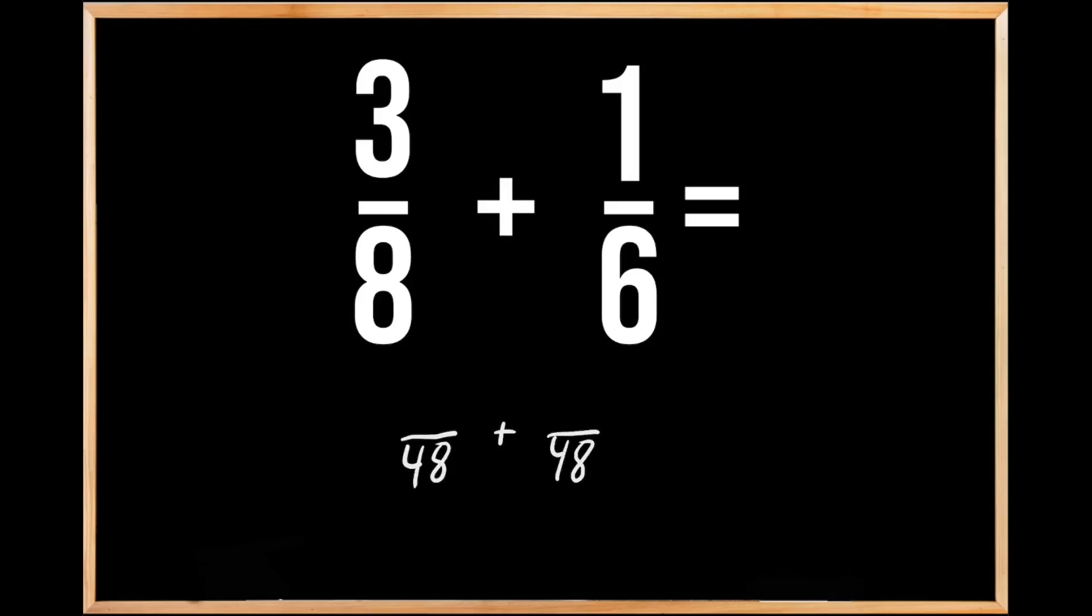We need to make sure that we keep these fractions equivalent, meaning we need to do the same thing to our numerator that we did to our denominator in order to get the common denominator of 48.